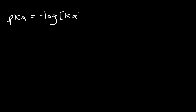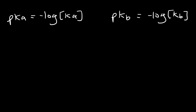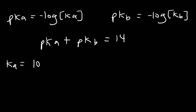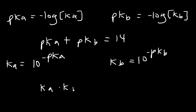In a similar way, pKa is the negative log of Ka, and pKb is the negative log of Kb. Kb is the base dissociation constant; Ka is the acid dissociation constant. Just as pH plus pOH adds up to 14, pKa plus pKb equals 14. To calculate Ka, that's 10 to the negative pKa. Kb is 10 to the negative pKb. And Ka times Kb equals 1 times 10 to the minus 14. Write down these formulas for your acid-base chemistry test.